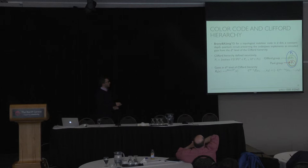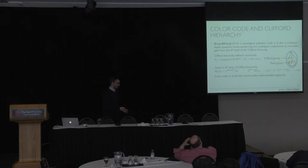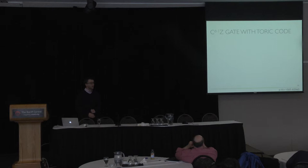It introduces this phase e to the power of 2πi over 2 to the power of d. And a d qubit control-Z gate, which introduces minus one phase if and only if all qubits are in one state. Let me recall this result that the color code in d dimensions has transversely implementable logical Rd gate. So how about the toric code?